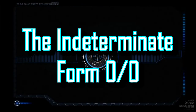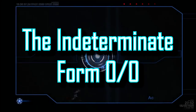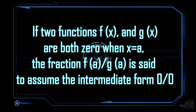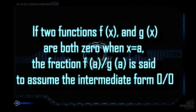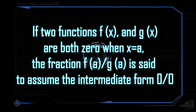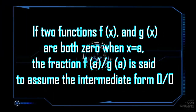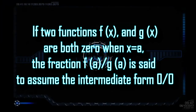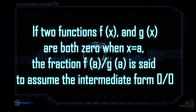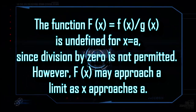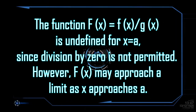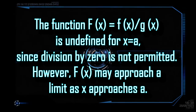Let's start with the indeterminate form 0 over 0. If two functions f(x) and g(x) are both 0 when x equals a, the fraction f(a) over g(a) is said to assume the indeterminate form 0 over 0. In this case, the function f(x) = f(x) over g(x) is undefined for x equals a, since division by 0 is not permitted.